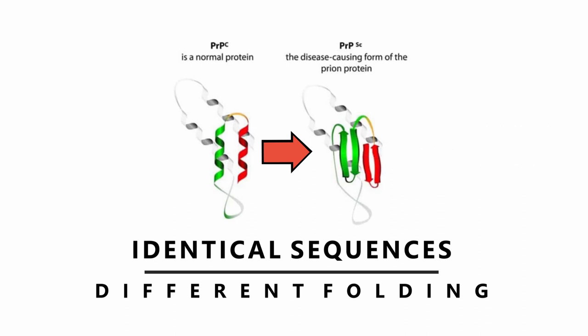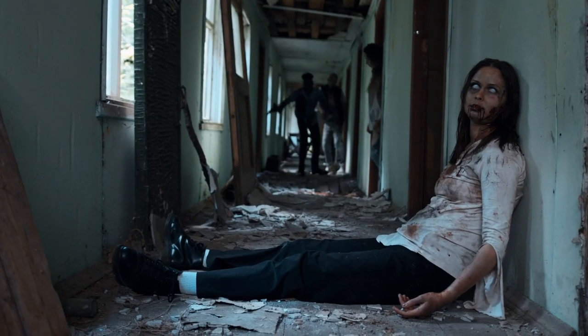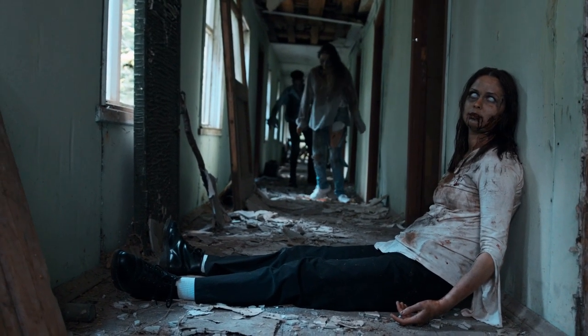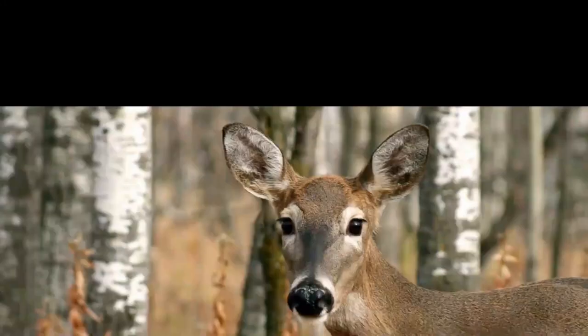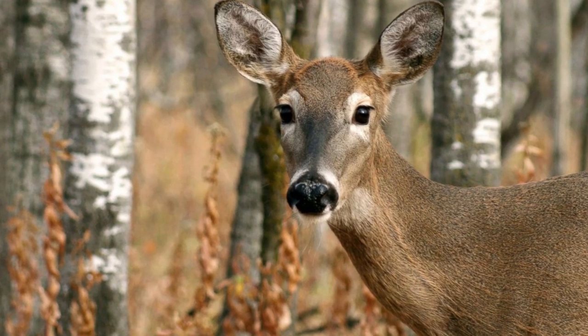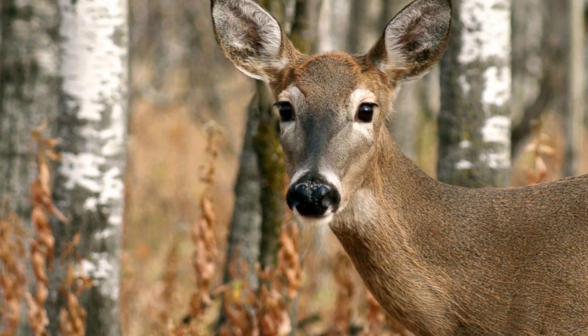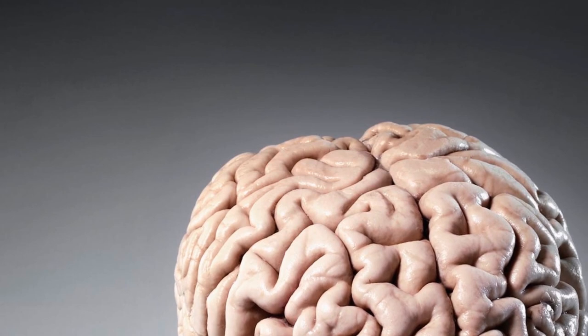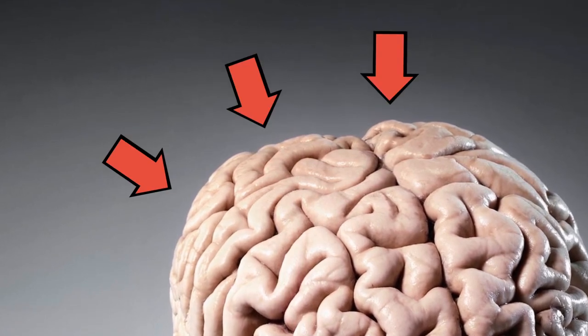The scrapie prion proteins not only clump together into protein aggregates, but when they encounter a normal healthy version of the prion protein, they convert it into the diseased misfolded form — a bit like a zombie turning a person into another zombie. Over time, this process of self-replication leads to a build-up of the prion protein scrapie form in neural tissues that causes progressive brain damage.